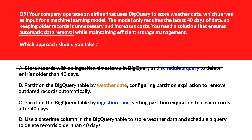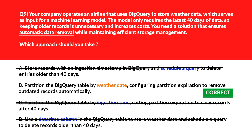Option C says partition the BigQuery table by ingestion time. Partitioning by ingestion time supports expiration but doesn't align with weather date filtering, resulting in inefficient automatic data removal — wrong answer. Option D says use a datetime column in the BigQuery table. Using a datetime column requires scheduled queries, which lack built-in automatic data removal and lead to higher costs — let's delete it. We'll lock option B as the right choice.